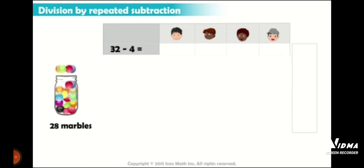First of all, out of the 32 we will distribute one marble to each child. So now each child is having one marble. Now if we subtract 32 minus 4, we have subtracted 4 among this 32. We get 28 marbles left in the jar.